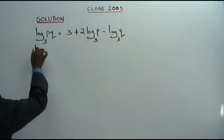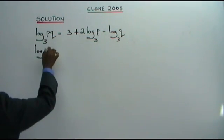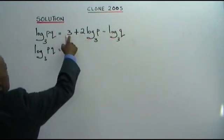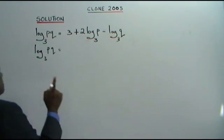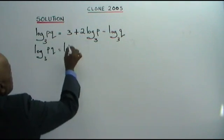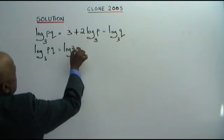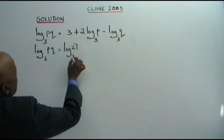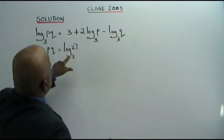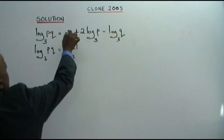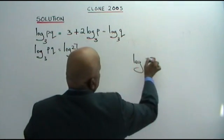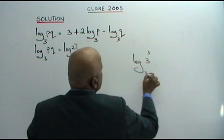If you look carefully, log PQ, base 3, is equal to — now we convert to log base 3. This will be log 3 cubed, that is 27, base 3. Three cubed is 27. So log 3 cubed, base 3.